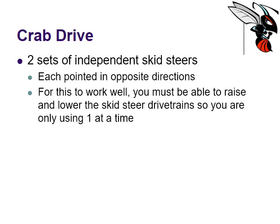The crab drive is essentially two sets of independent skid steers. In a crab drive setup, you've got two independent sets of skid steers, each pointed in the opposite direction — one skid steer moves forward and backwards, one moves left and right. If you don't have this working well, you're constantly creating scrub because you're always dragging wheels with you. However, if you build it such that one drivetrain can raise or lower, or possibly has omnidirectional wheels on it, you might be able to get away with a crab drive by minimizing the scrub caused as you move forward and drag a drivetrain.